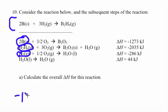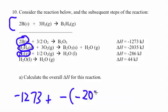2B, same side, negative 1273. B2H6, opposite side, so we're going to do a negative 2035.